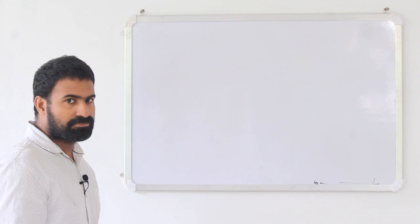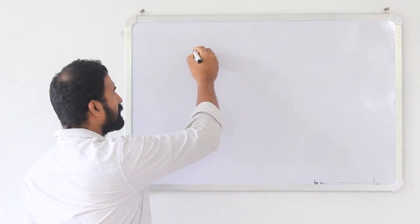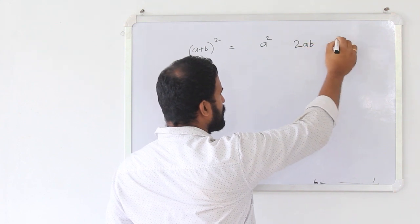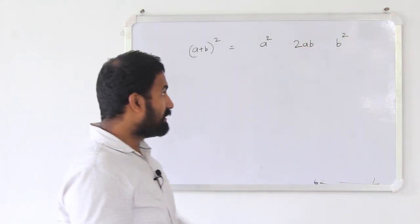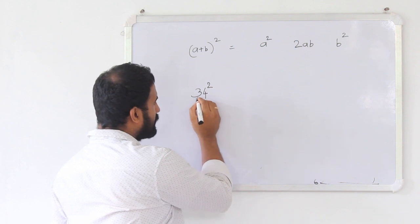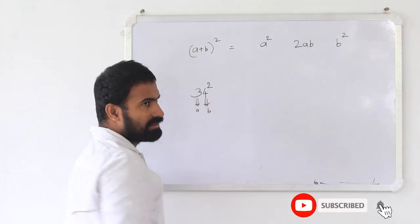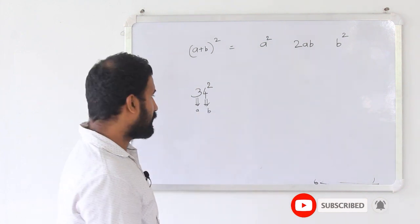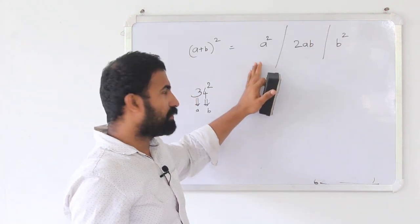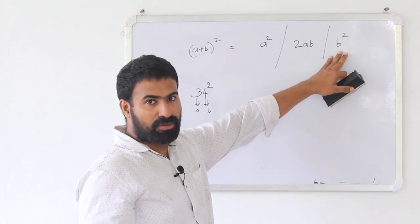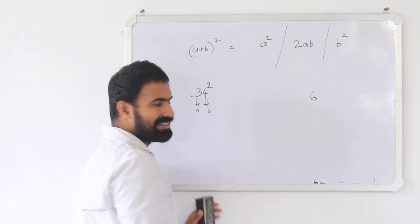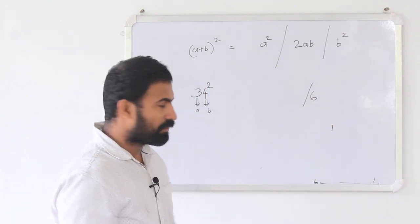We have to do a two-digit number. We need to tell a formula: a plus b whole square equals a squared plus 2ab plus b squared. This is what we have done — we have to write on the right side. Now let's take one example: 34 squared. In this case, 3 we have as A and 4 we have as B. We write in three sections: B square, 2AB, and A square.